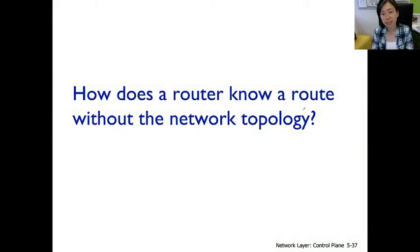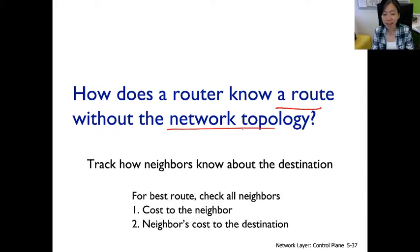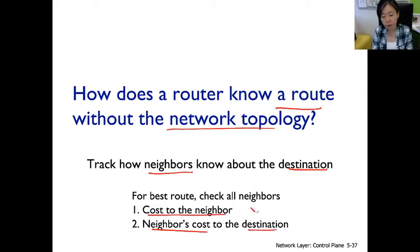A router can discover a route without seeing the entire network topology by asking its neighbors for help. Neighbors report how they know about the destination. You know the neighbor's cost to the destination and your cost to reach each neighbor. Let x be your cost to a neighbor and y be that neighbor's cost to the destination. You calculate the sum x plus y, and if it's not infinity, you've discovered a route to the destination.